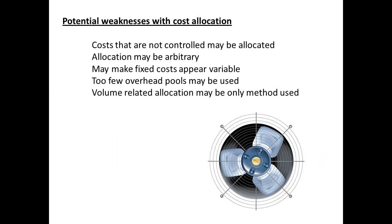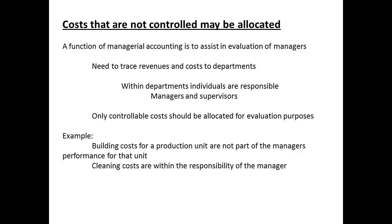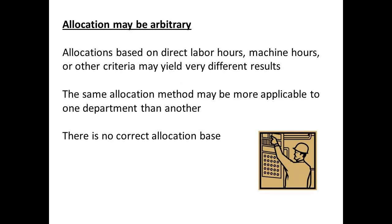There are a number of potential weaknesses concerned with cost allocation. These include what to do about costs that cannot be easily allocated, whether some allocation is arbitrary, whether it makes fixed costs appear variable at times, whether sufficient cost pools are being used, and whether volume-related allocation is the best method. A particular problem occurs if cost allocation is used to evaluate performance of managers. It is necessary to ensure that only the costs that can actually be controlled in some way by that manager are being considered. Non-controllable costs should not form a part of the manager's evaluation. There will always be an arbitrary element in choosing the allocation base, and the base may actually be more suitable for one department than it is for another. It is important to realize that there is not a correct allocation base for each department.